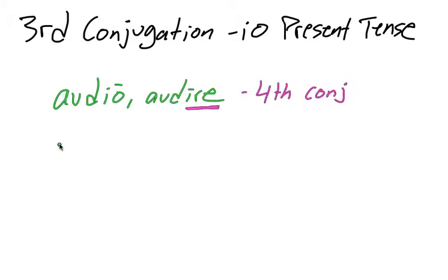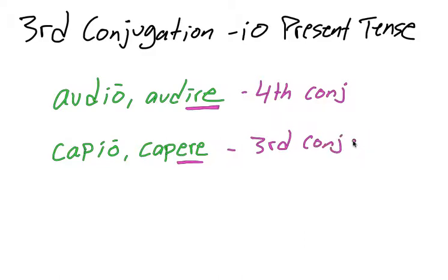Now I'm going to give you a third i-o conjugation verb, and that verb is going to be capio. So it has the same i-o, but the infinitive is capere, short e-r-e, like a third conjugation verb. So this is a third conjugation verb, but it's a third i-o verb, still third conjugation.